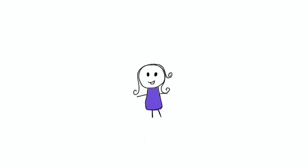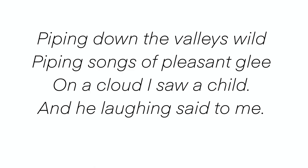Jumping into the first two stanzas of the introduction to the Songs of Innocence, it says: 'Piping down the valleys wild, piping songs of pleasant glee, on a cloud I saw a child, and he laughing said to me: pipe a song about a lamb. So I piped with merry cheer. Piper, pipe that song again. So I piped — he wept to hear.'